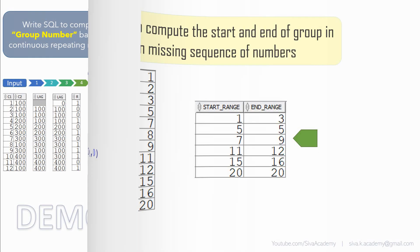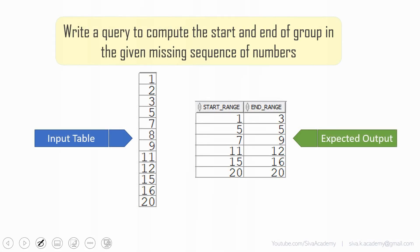Here is a very similar question aligned with the current one, though the implementation has to be different. We are provided with a table containing a sequence of numbers, and we need to group them based on the continuous sequence. For example, this table contains: 1, 2, 3, 5, 7, 8, 9, 11, 12, 15, 16, and 20.